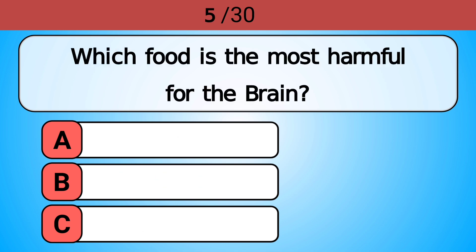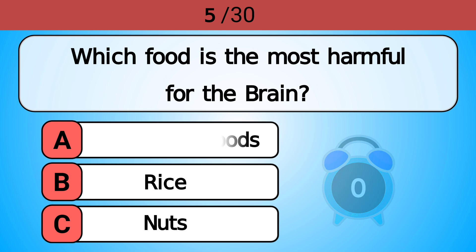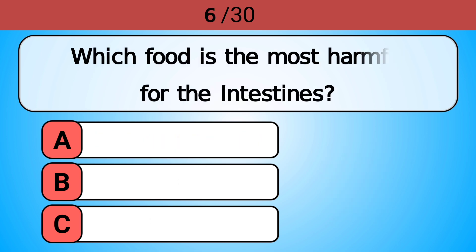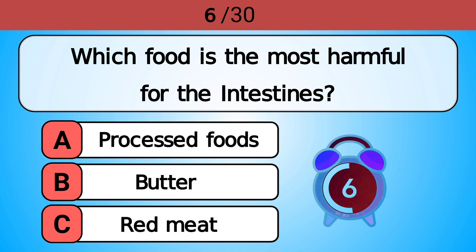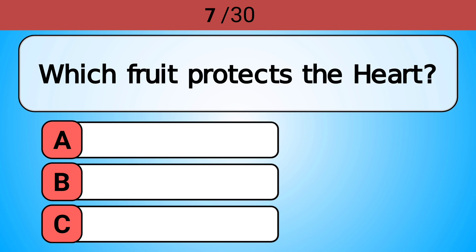Which food is the most harmful for the brain? Answer A, high sugar foods. Which food is the most harmful for the intestines? Answer A, processed foods.